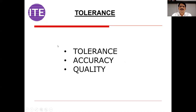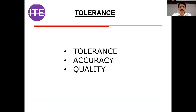There are three terminologies we have to understand. One is tolerance, second is accuracy, and third is quality — very small differences between them. Tolerance is applicable to a dimension or a geometry — geometric tolerance or dimensional tolerance. When we say accuracy, it can be related to a dimension, maybe speed, temperature, or pressure, so other parameters are also involved.